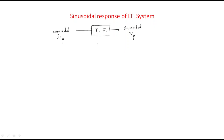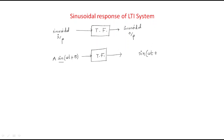For example, we give a sinusoidal input — that is A·sin(ωt + θ) — to the transfer function or system. We will then get a sinusoidal output automatically. The output will have the same frequency ω with phase (ωt + θ + φm), and with some magnitude factor m.